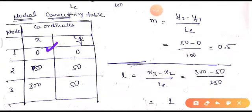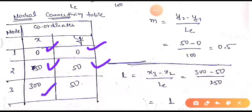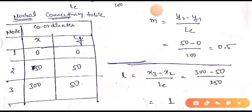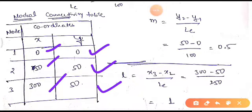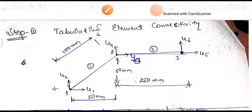To summarize: node 1 is the reference with x = 0, y = 0; node 2 is at x = 50, y = 50; and node 3 is at x = 350 — that is, 300 from the reference along x and 50 along y. These are x1, x2, x3 and y1, y2, y3. Once we define the nodal connectivity table, we need to define the elemental connectivity table.